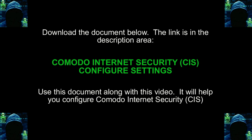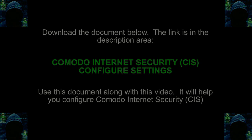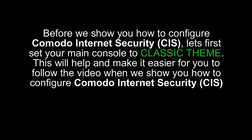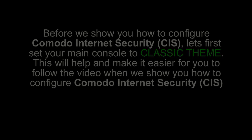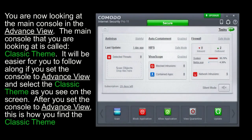You are now looking at the main console in the Advanced View. The main console that you are looking at is called Classic Theme. It will be easier for you to follow along if you set the console to Advanced View and select the Classic Theme as you see on the screen.